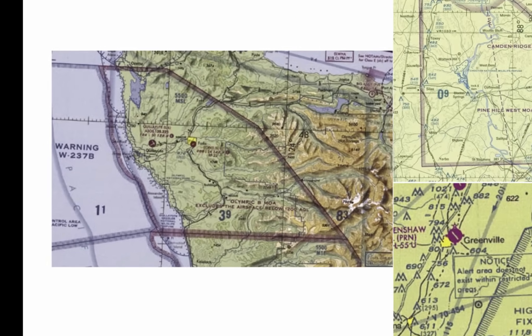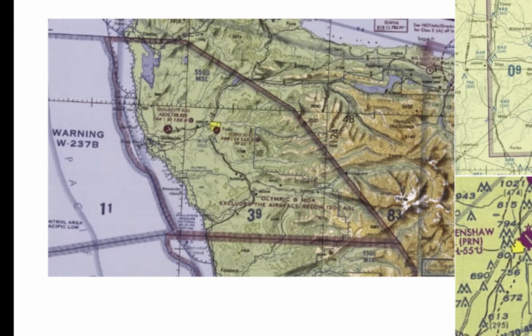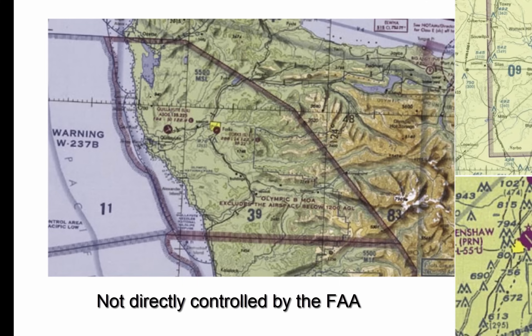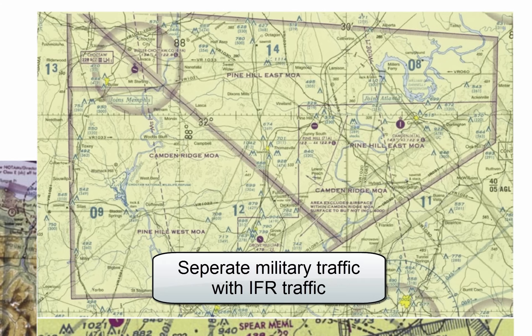A warning area is airspace of defined dimensions extending from 12 nautical miles outward from the coast of the United States, containing activity that may be hazardous to non-participating aircraft. This area is not directly controlled by the FAA and is a warning to non-participating pilots of potential danger. Military operating areas are established for the purpose of separating certain military training activities from IFR traffic. During operations, non-participating IFR traffic may be cleared through a military operating area if IFR separation can be provided by air traffic control.